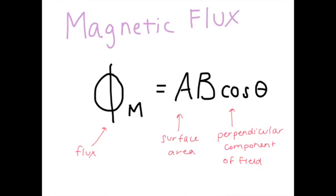To describe the strength of a magnetic field, we use magnetic flux. This is defined as the number of field lines that cross a certain area.